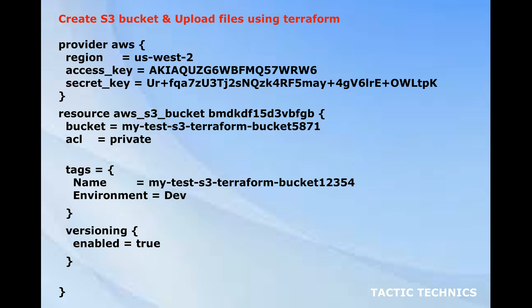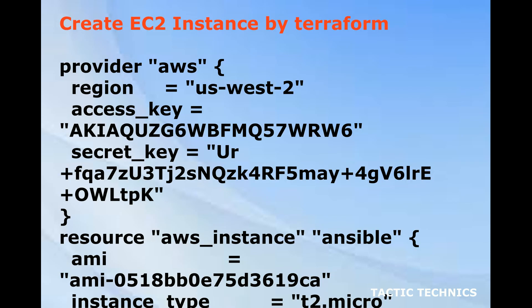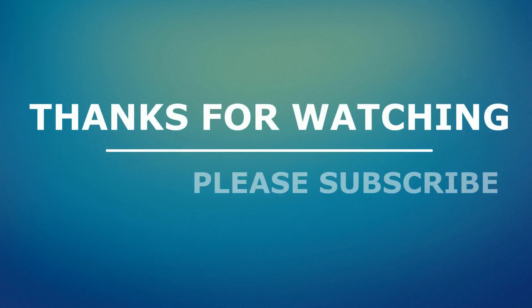Create an EC2 instance using Terraform. The example shows configuring an AWS provider with region us-west-2, and defining an aws_instance resource with an AMI ID and instance type t2.micro. Thanks for watching, please subscribe to the channel.